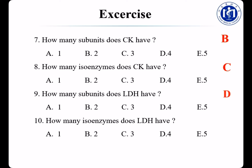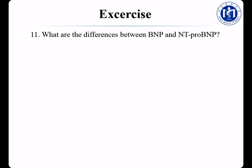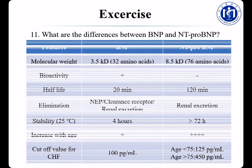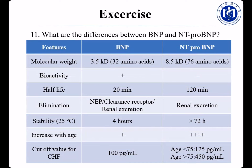How many subunits does CK have? CK has two subunits: M and B. How many isoenzymes does CK have? CK has three isoenzymes: CKMM, CKMB, and CKBB. How many subunits does LDH have? LDH is a tetramer, containing four subunits. How many isoenzymes does LDH have? LDH has five isoenzymes: LD1 to LD5.